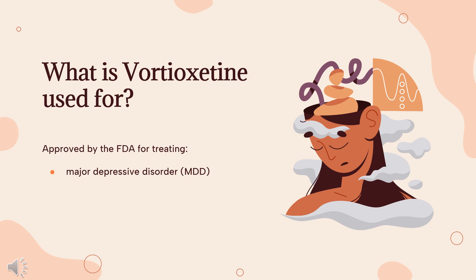Dose — Major Depressive Disorder: Indicated for Major Depressive Disorder (MDD) in adults. 10 mg orally once daily; dose should then be increased to 20 mg per day as tolerated. Consider decreasing dose to 5 mg per day if higher doses are not tolerated. Efficacy and safety of doses greater than 20 mg per day have not been evaluated.